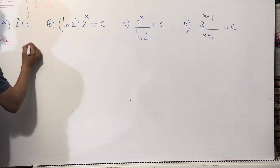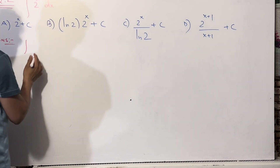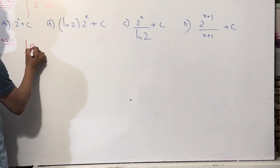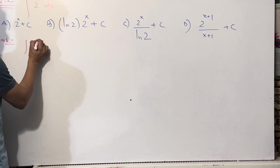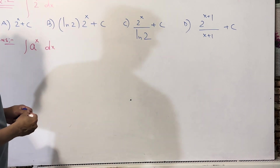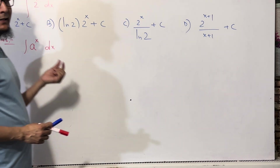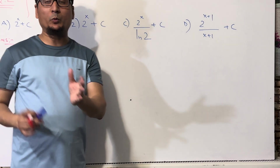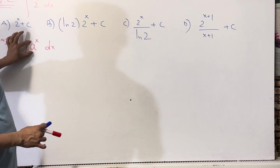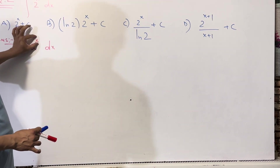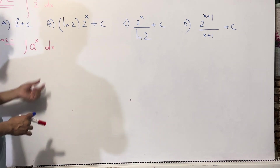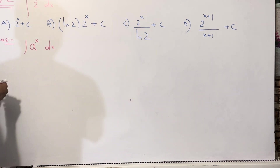Before solving 2^x, I'm going to tell you that if you have ∫a^x dx, how will you solve it? Here a is a number — it could be 2, 3, 4, 5, 6 — whatever the number, a is a constant here, and x is a variable. There is a formula — let me put it down.